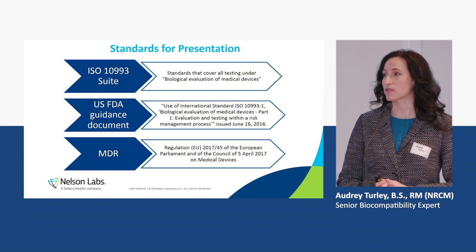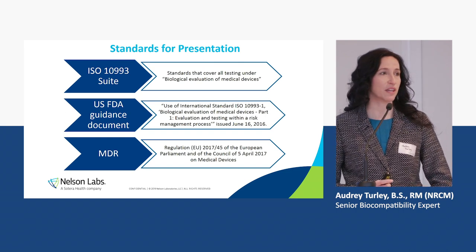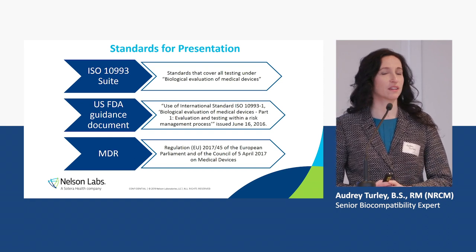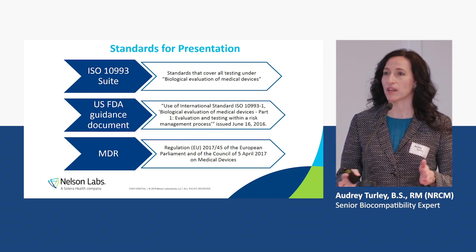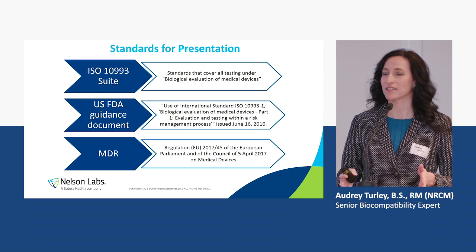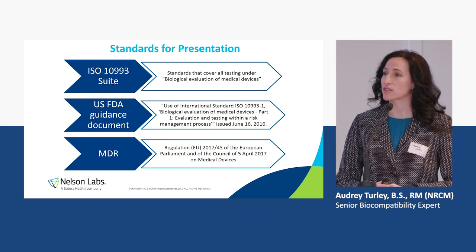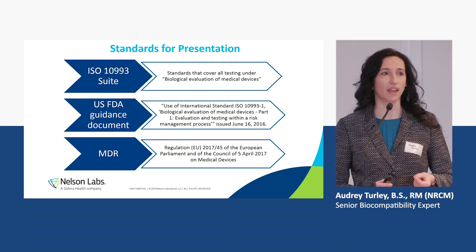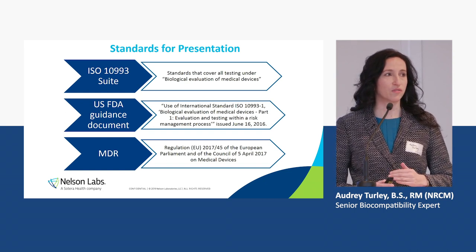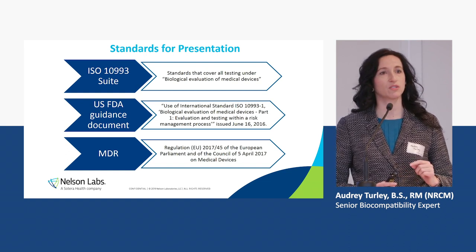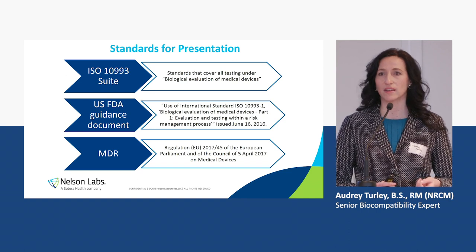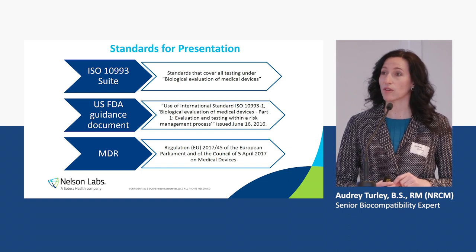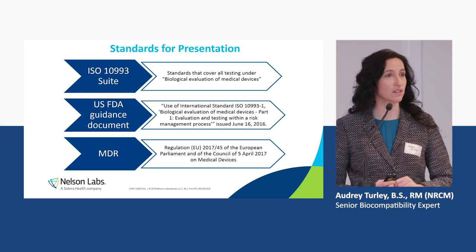It's important to understand the standards we're going to reference when we talk about biocompatibility. ISO 10993 is a suite of standards — there are over 30 sections, and the main focus is usually between sections 1 and 18 for testing and requirements. We also reference the USA FDA guidance document, which the FDA wrote so we could understand how they interpret 10993 Part 1. It's very useful when approaching biocompatibility, and it's available for free online.